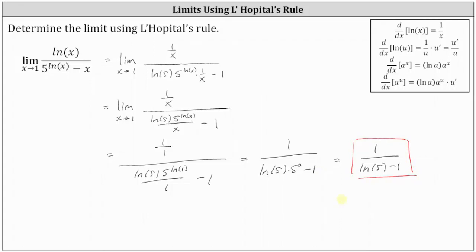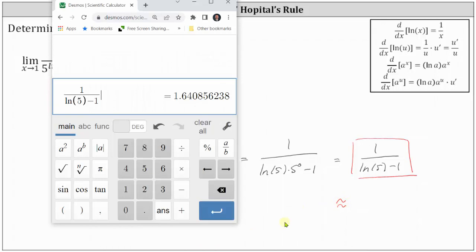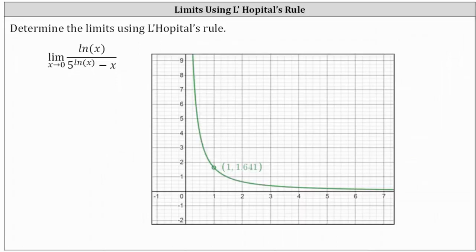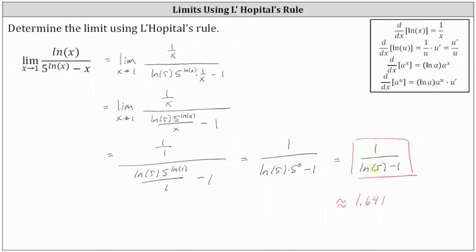Before we check this graphically, let's get a decimal approximation to three decimal places. The limit is approximately 1.641. Analyzing the graph of the original function, notice as we approach x equals one from the right and the left, we are approaching the same y value, which is approximately 1.641, which we now know is exactly one divided by the difference of natural log five and one. I hope you found this helpful.